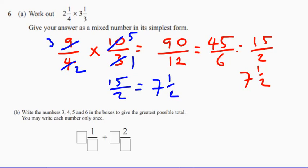Now let's have a quick look at part B. It says write the numbers 3, 4, 5, and 6 in the boxes there to give the greatest possible total. You may write each number only once. Now straight away I'm going to think about the six...